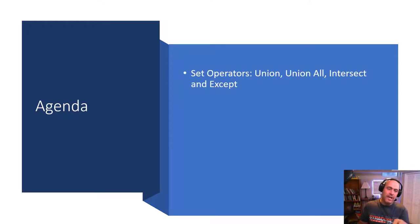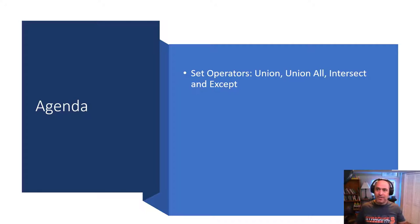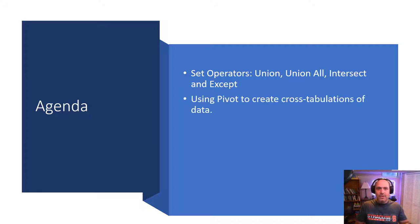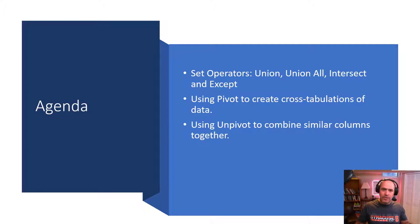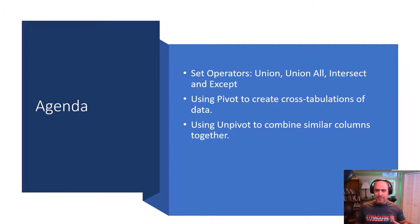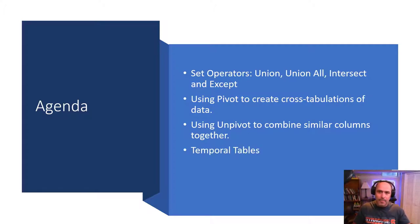So the agenda: we'll look at the set operators first. These are operators that allow us to combine two SELECT queries together to produce a unified single output. Then we'll also look at the PIVOT operator, which allows us to take rows of data and transform them into columns of data, creating cross tabulations. And then we'll look at UNPIVOT, which allows us to take several columns and combine them into a single column of rows. So just two ways to transform your data. And then we'll follow up and finish with temporal tables and temporal queries.